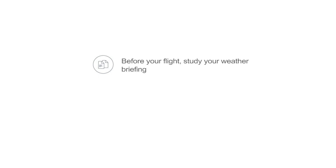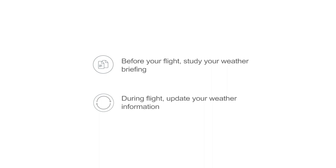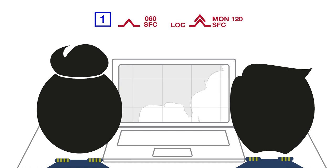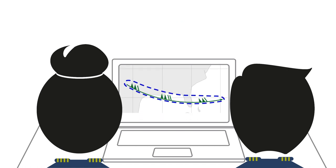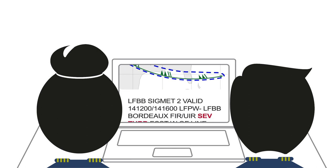In order to anticipate clear air turbulence, we recommend before the flight studying carefully your weather briefing. Weather charts give forecast of the location and level of clear air turbulence. During flight, update weather information if possible. In areas of forecast clear air turbulence, air traffic control may provide real-time updates. You can find symbols of severe turbulence with associated levels in the significant weather chart, and details of severe turbulence in the SIGMET message.